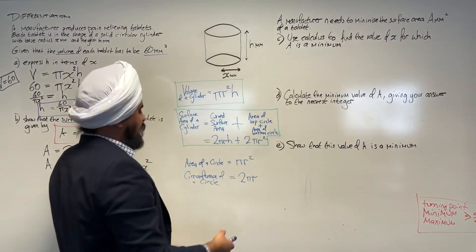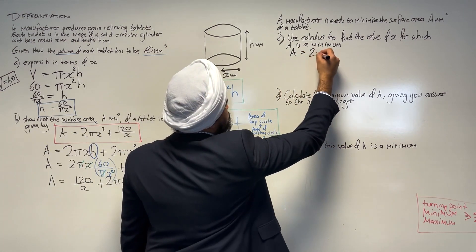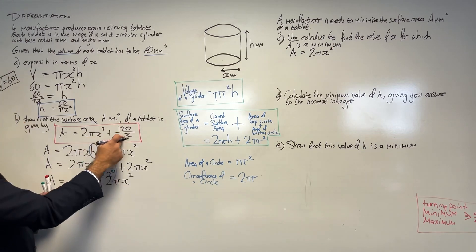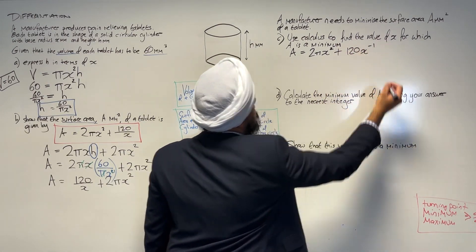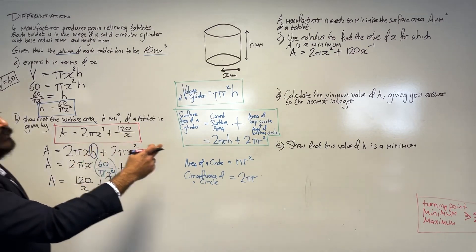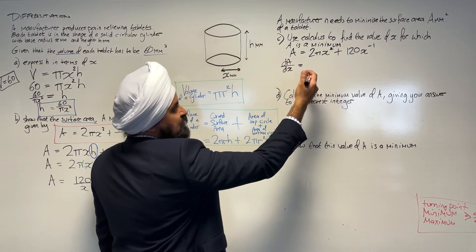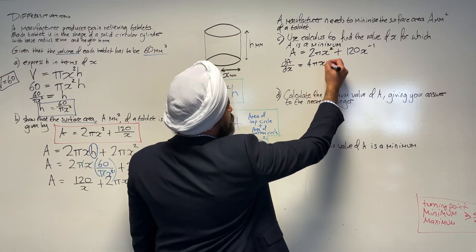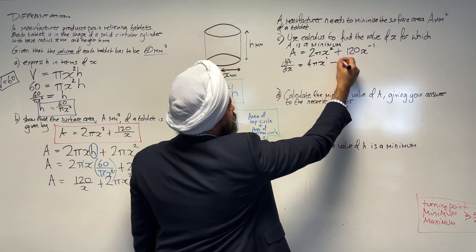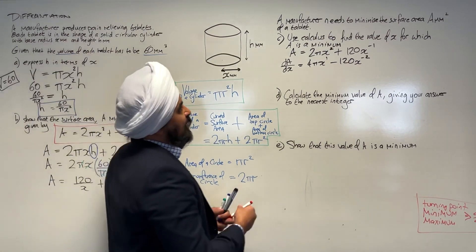I want to work out the value of x for A, so let me rewrite: A equals 2 pi x squared plus 120 over x. As I'm going to be differentiating, I want to rewrite this in index notation: 2 pi x squared plus 120 times x to the power of minus 1. Now differentiating: dA by dx equals — multiply by the power — 4 pi x to the power of 1, then minus 1 times 120 is minus 120, take away 1 from the power giving x to the power of minus 2. So dA by dx equals 4 pi x minus 120 x to the power of minus 2.